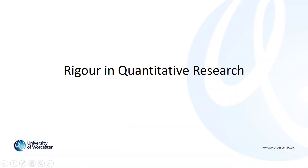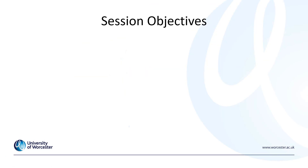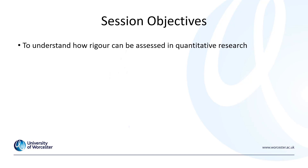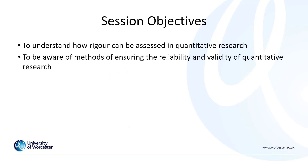The penultimate unit will look at rigour in qualitative and quantitative research. This will help to ensure that your proposed research is of high quality and of a rigorous nature. The session objectives are to understand how rigour can be assessed in quantitative research and to be aware of methods of ensuring the reliability and validity of quantitative research.